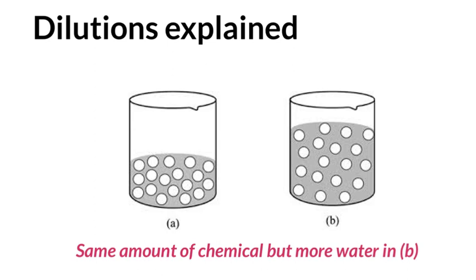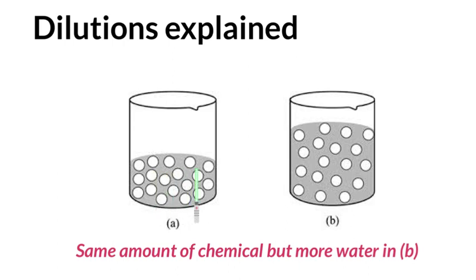Let's put it simply. If we look at these two solutions, we've got one with the water level low and a certain amount of chemical. Over here in this one, I've still got the same amount of chemical but I've added more water — so we would say I have diluted it. You can go from concentrated to dilute by simply adding water. The key is that the amount of chemical does not change.